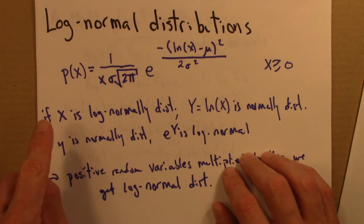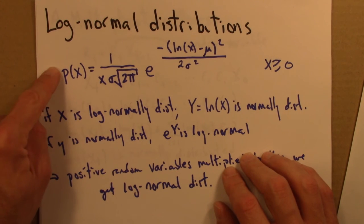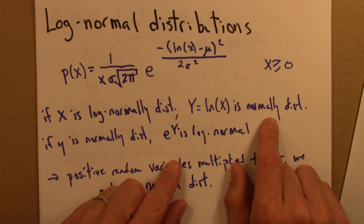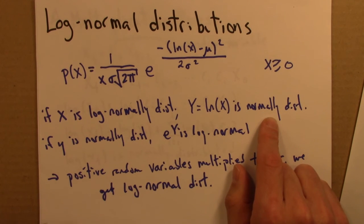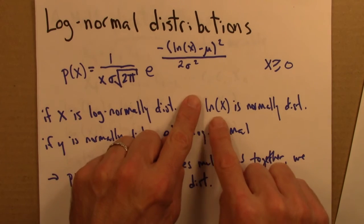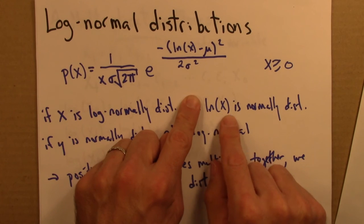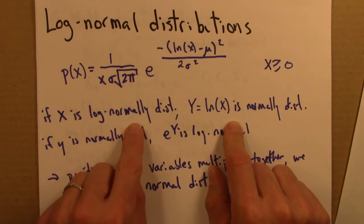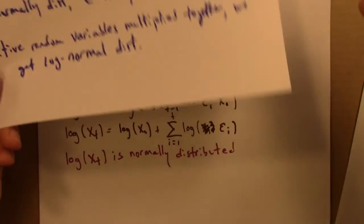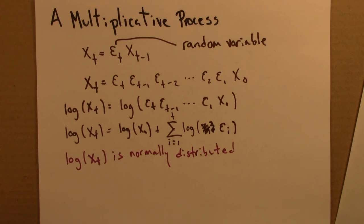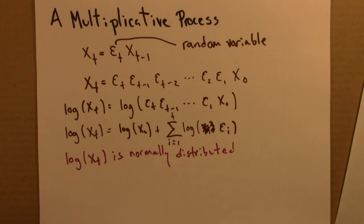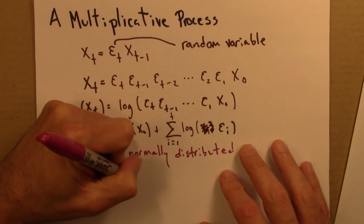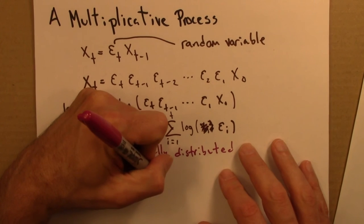So log normal distribution. So if x is log normally distributed then that means that log of x is normally distributed. And that's exactly the situation we have here. We have a variable whose logarithm is normally distributed. So that means that the variable itself is log normally distributed.